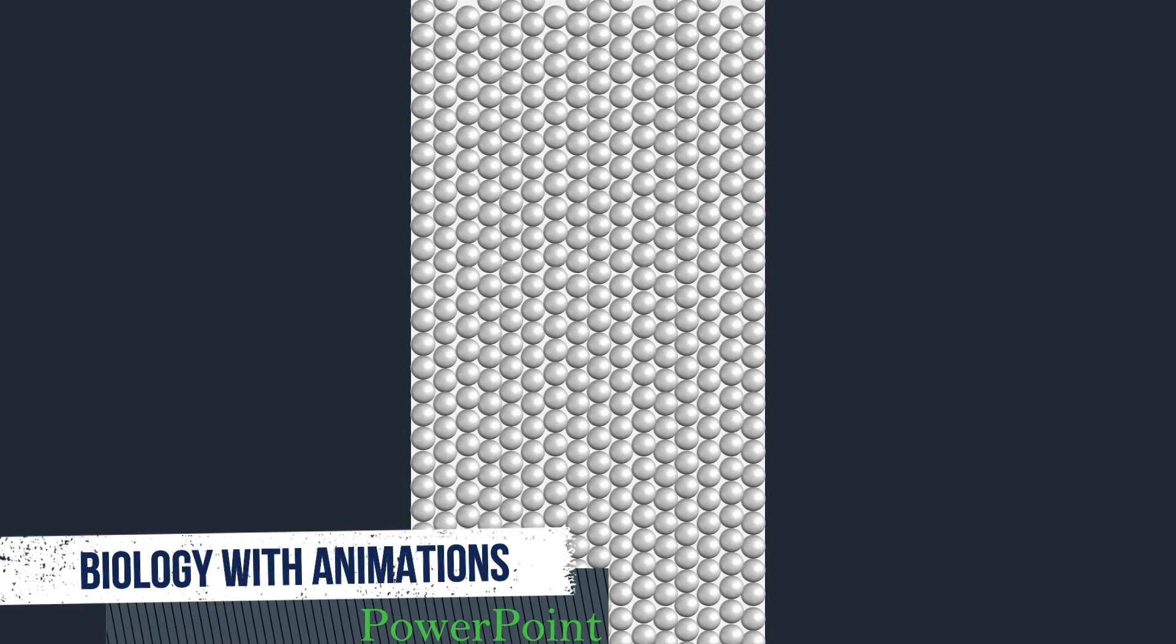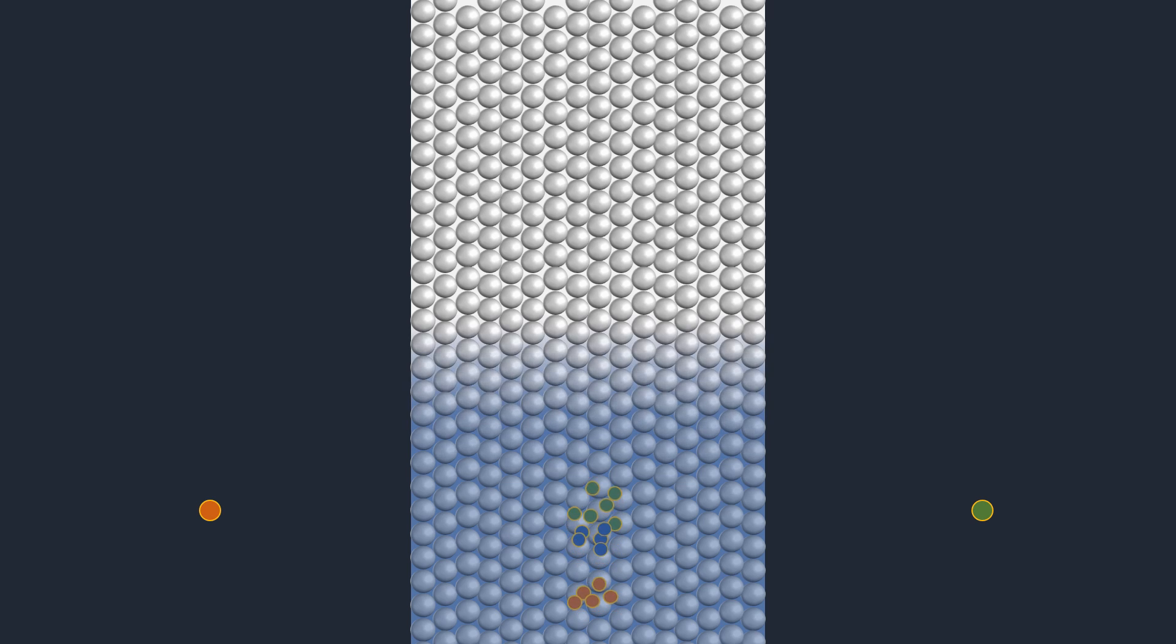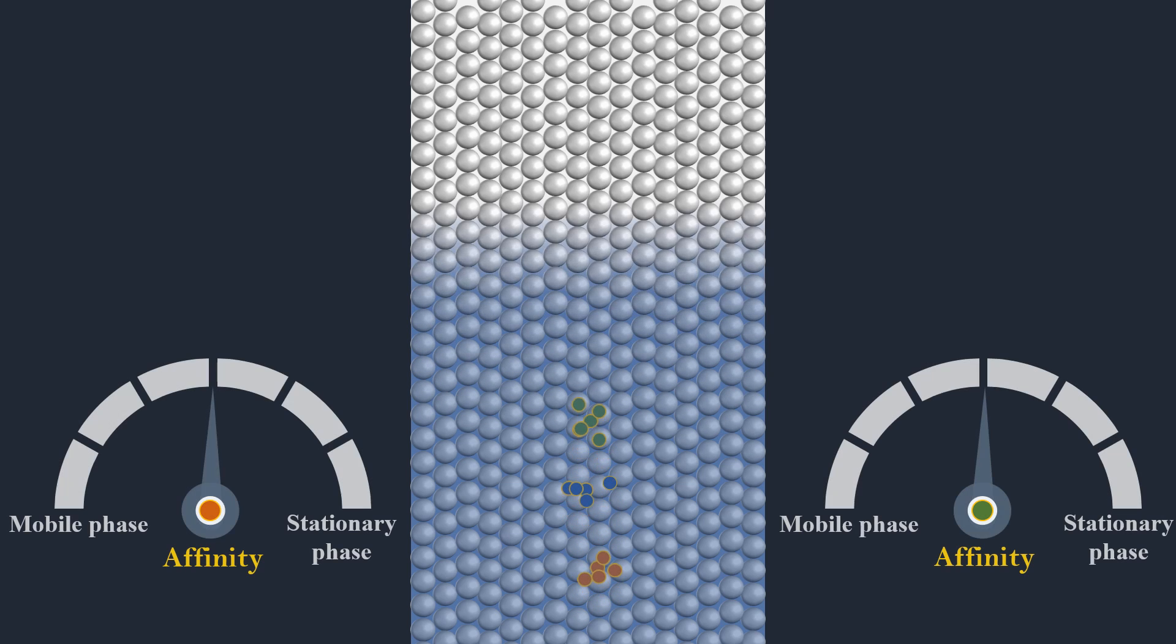The separation is based on differential partitioning of the sample components between the mobile phase and the stationary phase. The component which has less affinity to the stationary phase, consequently, less interaction travels further up the TLC plate.